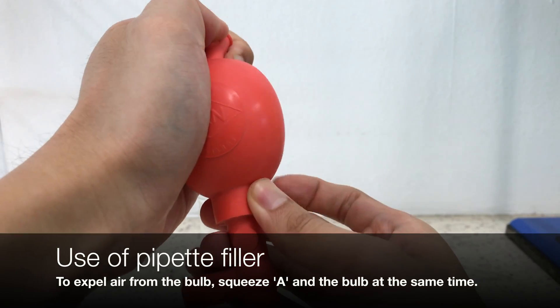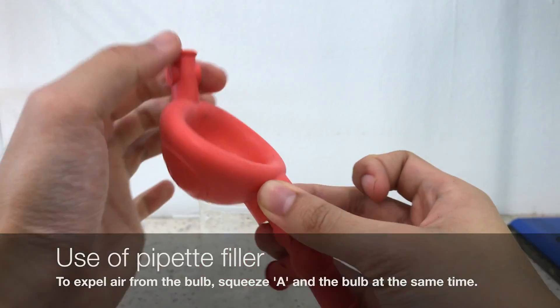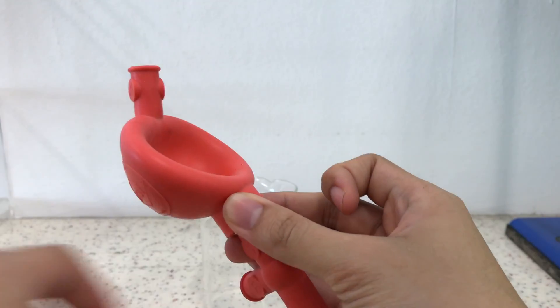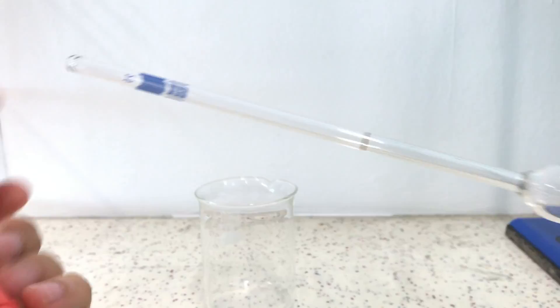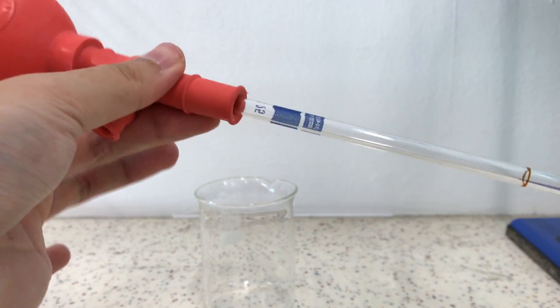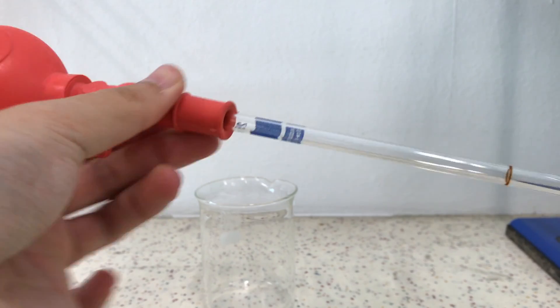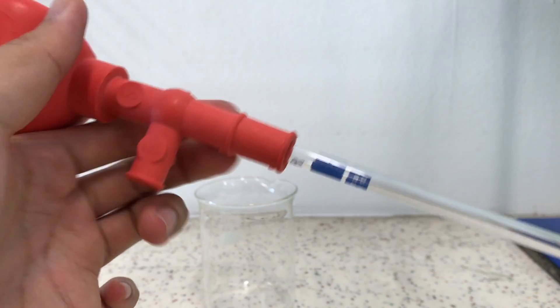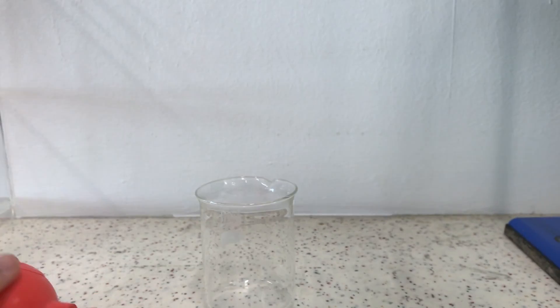Now, we hold down the A to expel the air from the bulk of the pipette, like so. We then twist and insert the pipette filler into the top of the pipette. Make sure it is firmly attached but not too tight.